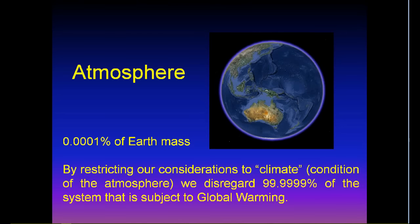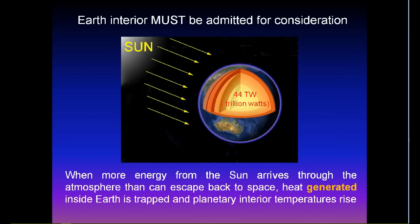The atmosphere comprises very tiny percentage of Earth mass. By restricting our consideration to climate, which is a condition of the atmosphere, we disregard almost the entire system that is subject to global warming. Earth interior must be admitted for consideration.